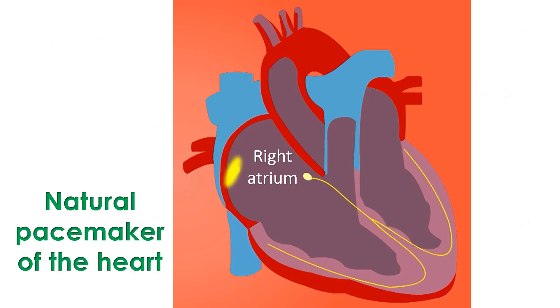Normally, the heartbeats are regulated by the natural pacemaker of the heart known as the sinus node, which is situated in the upper right corner of the right atrium.